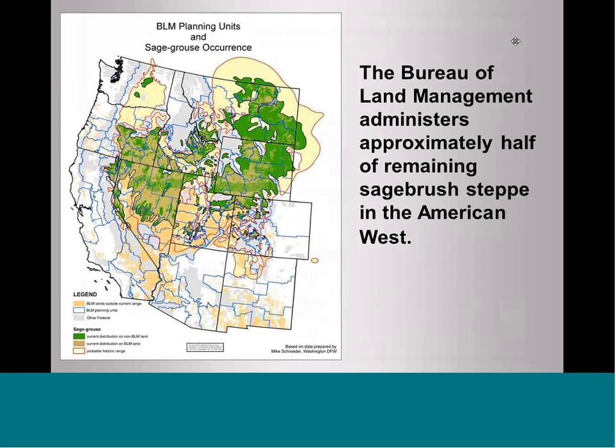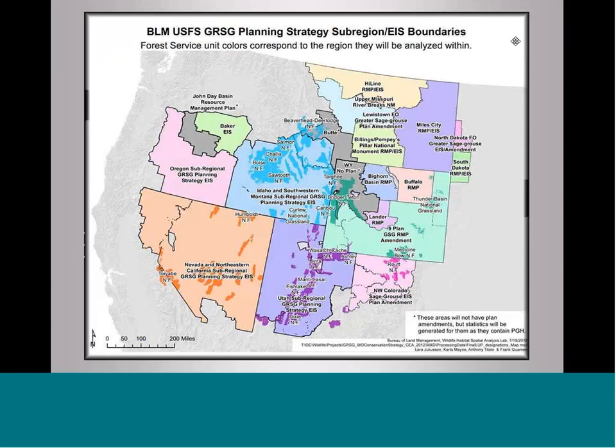The Fish and Wildlife Service's finding and listing schedule has spurred an unprecedented federal planning process for greater sage-grouse. Many federal and state agencies are involved, including the Bureau of Land Management, the U.S. Forest Service, the Fish and Wildlife Service — through both their Species Listing Division and Refuges Division — the Natural Resources Conservation Service, and others. Our webinar today will chiefly focus on the BLM and U.S. Forest Service planning process, though other federal and state agencies are also heavily involved in greater sage-grouse conservation planning.